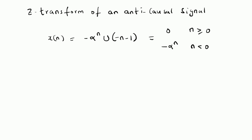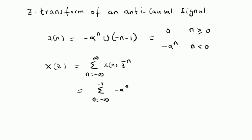For this given signal, let us look at the Z-transform. That is, X(Z), which is defined as the summation from n = -∞ to +∞ of x[n] · Z^(-n). By using the definition of x[n], this summation becomes the summation from n = -∞ to -1 of -α^n multiplied by Z^(-n).